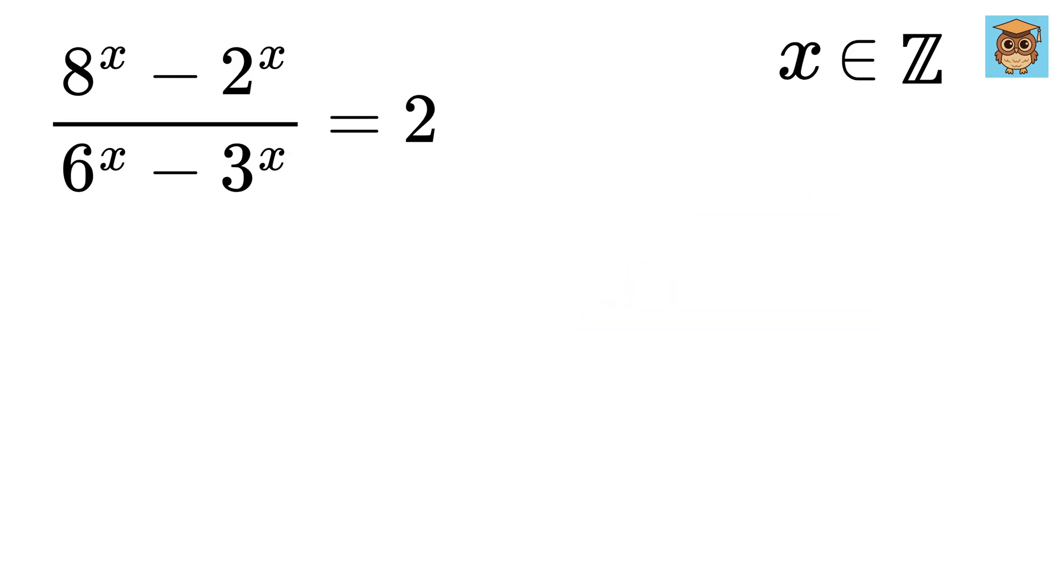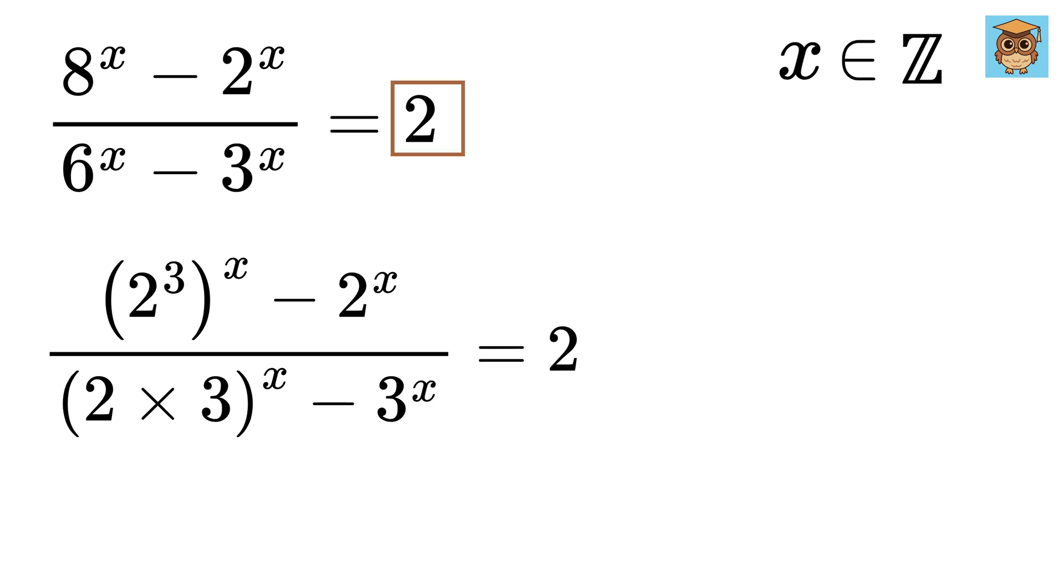As a first step, we can write this 8 as 2 cube and this raised to x minus 2 to the x upon 6 can be written as 2 times 3 and whole raised to x minus 3 to the x equals 2.